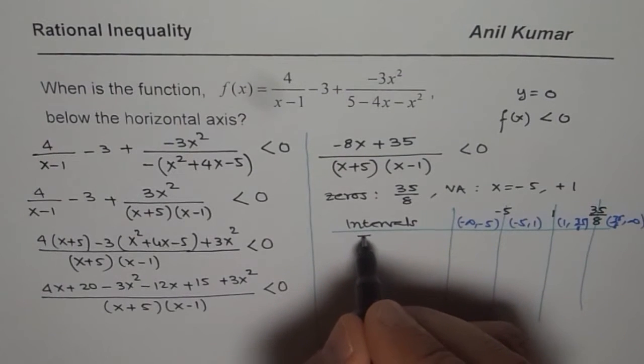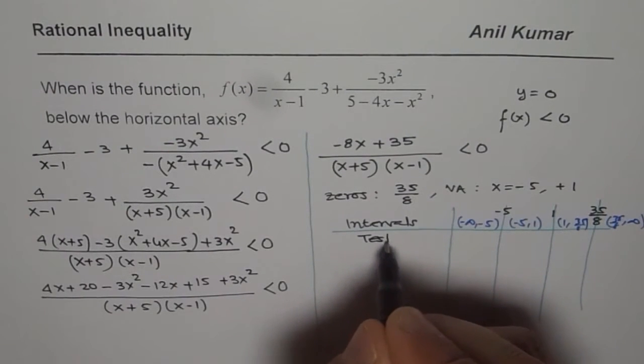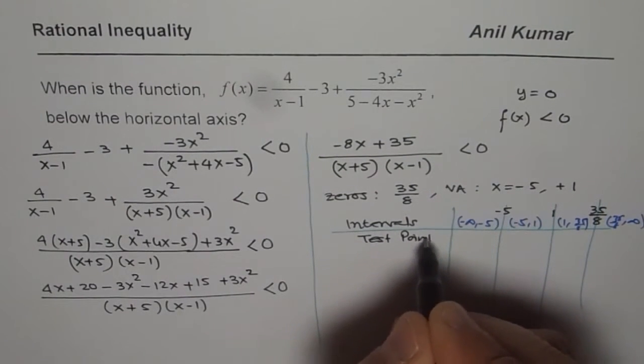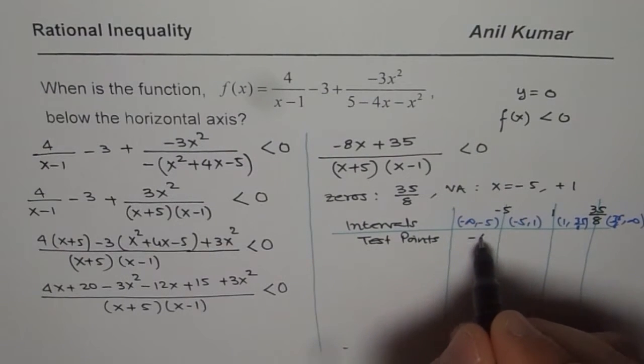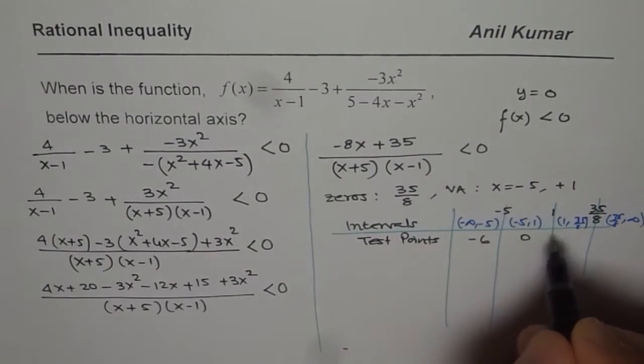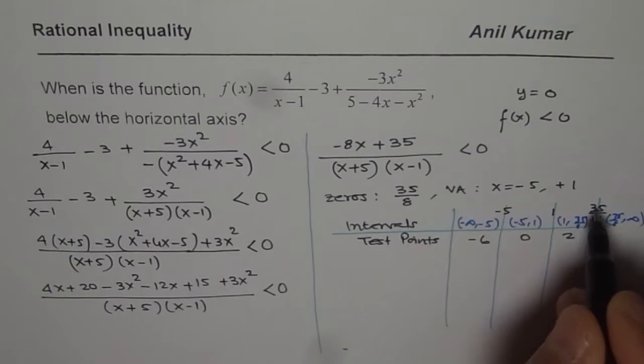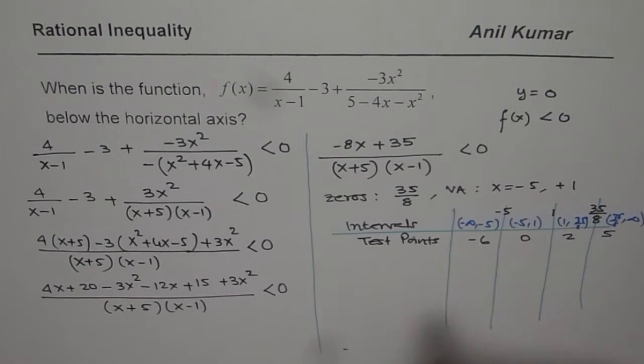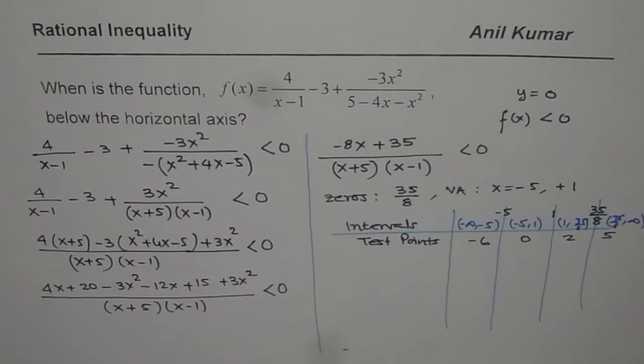In each interval, we will take test points. Test points could be minus 6 here, 0, 2, and greater than 4. Let us take 5.